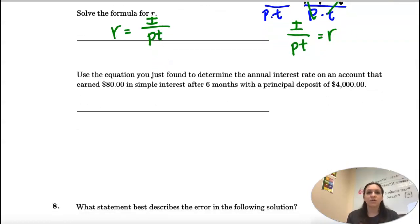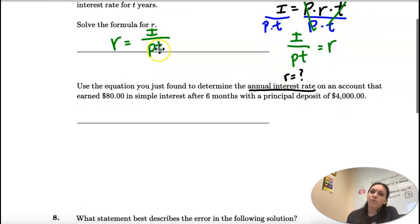Now it's asking us to use the equation we just found to determine the annual interest rate. So we're trying to find R. Okay, so we have I.